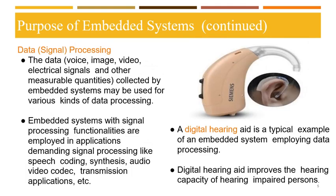Next we have data processing. The data — which can be voice, image, video, electrical signals, and other measurable quantities — collected by embedded systems may be used for various kinds of data processing. Embedded systems with signal processing functionalities are employed in applications demanding signal processing like speech coding, synthesis, audio/video codec, and transmission applications. A digital hearing aid is a typical example of an embedded system employed for data processing, as it improves the hearing capacity of a hearing-impaired person.